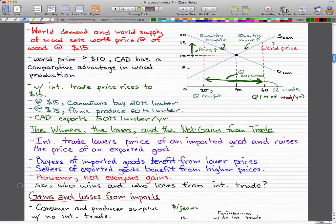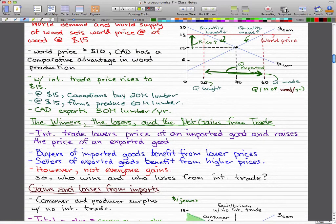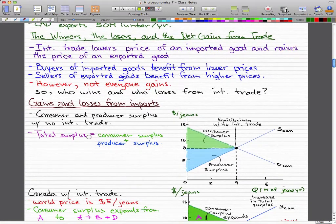Buyers of imported goods benefit from the lower prices. The sellers of exported goods benefit from higher prices. But some people complain about international competition. Not everyone gains. So who wins and who loses from international trade is what we're going to try to answer next.